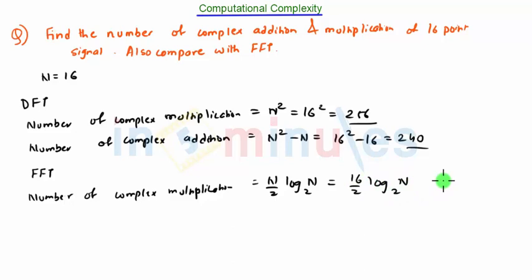Log₂16 = 4 because 2⁴ = 16. So we get 8 × 4 = 32 multiplications.